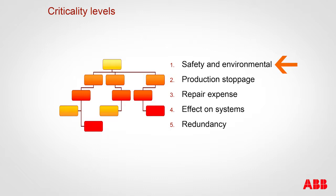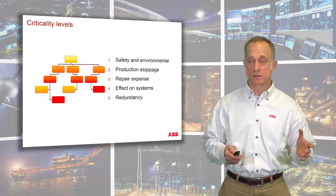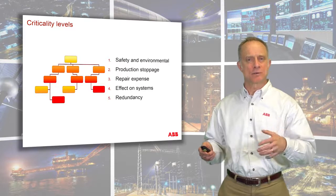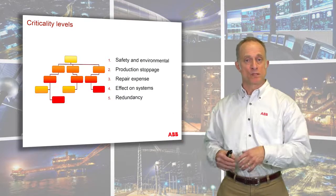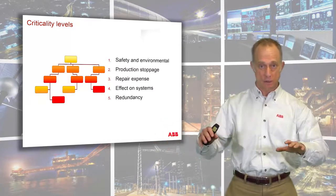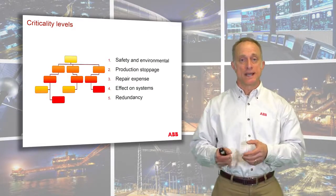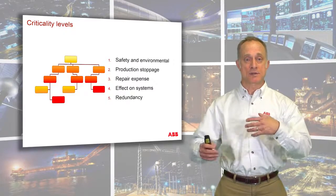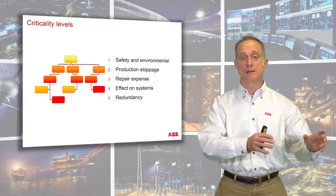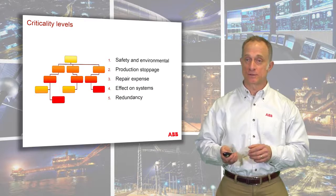Environmental impact is at the same level as safety. The next consideration is production stoppage — if you're not making product, you're not making money. Third is maintenance expense: how costly is it to repair a certain piece of equipment? Fourth is the effect on systems — what ripple effect will a failure have on other pieces of equipment? And fifth is redundancy: if the process lacks redundancy so that a failure in one area can't be picked up elsewhere, that raises the criticality level.